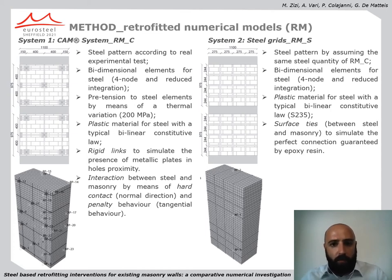As far as system 2, the steel grid system, is concerned, again bidimensional elements have been adopted, and also in this case, a plastic material model for simulating the steel behavior is used. The steel pattern of this second system has been defined by assuming the same steel quantity of system 1. In the end, the interaction between the steel elements and the masonry panel has been proposed by means of surface ties in order to simulate the perfect connection between these two materials.